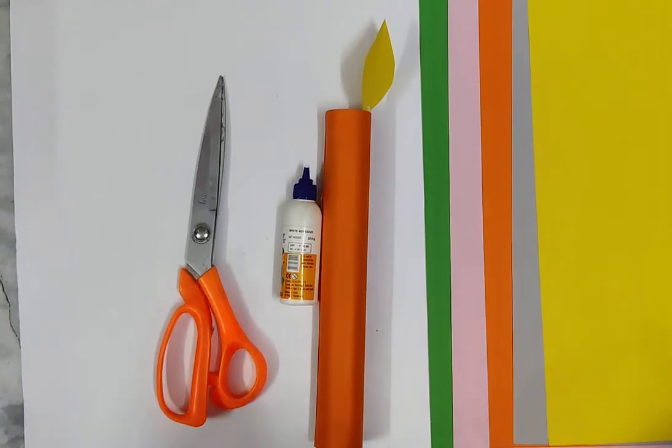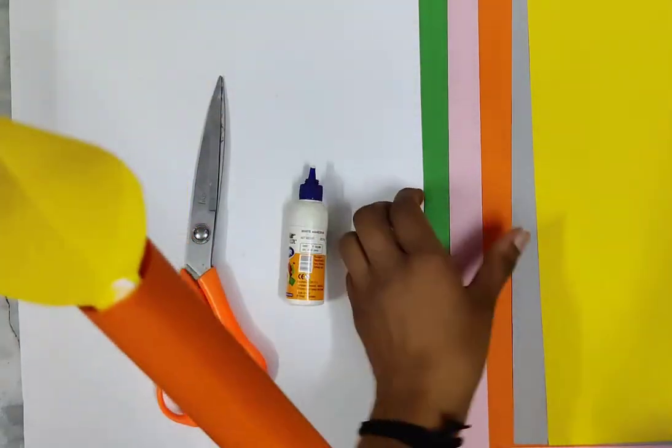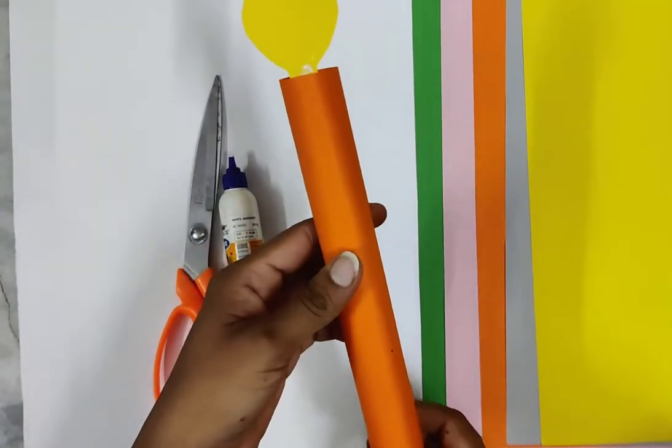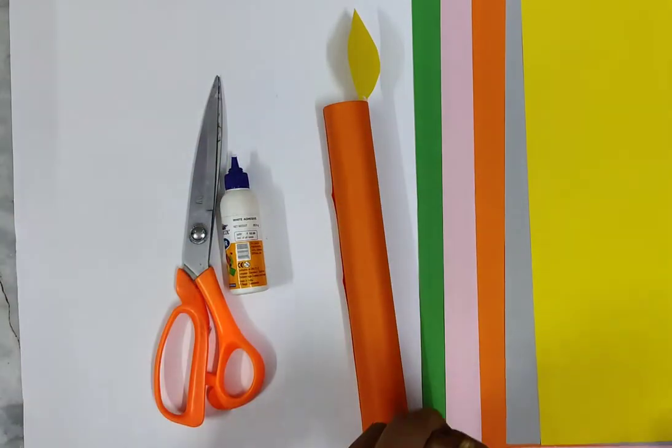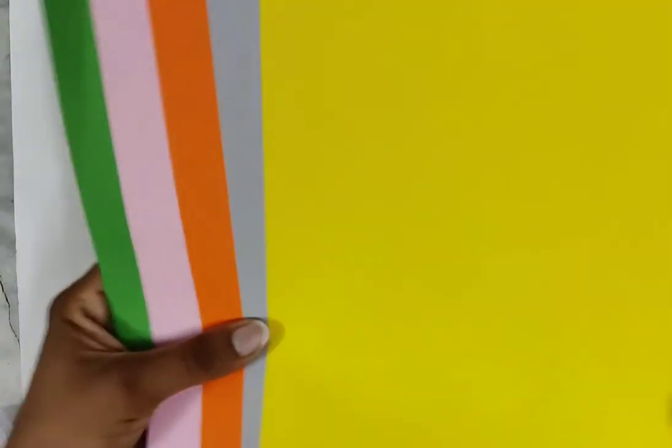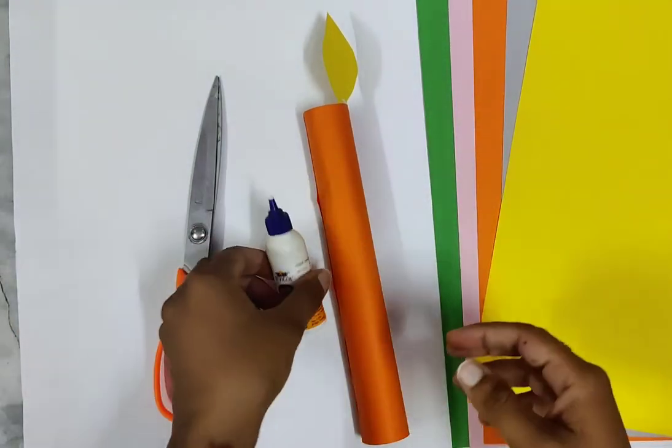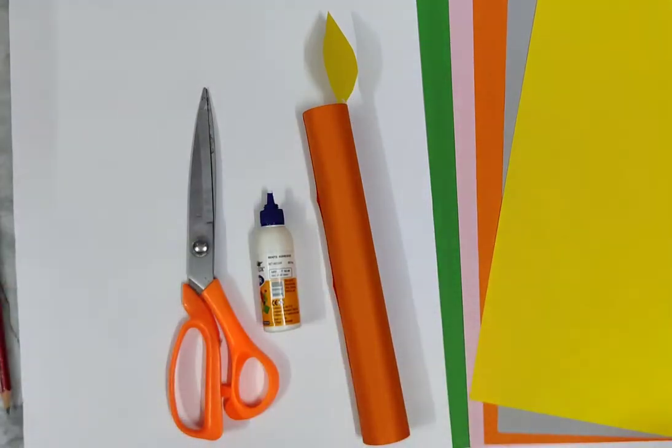Okay hello everyone, so today I am going to teach you how to make an origami candle with these beautiful papers. For this beautiful origami paper candle, we need these materials. First you need some colorful sheets with A4 size, you need fevicol, scissors, and pencil.